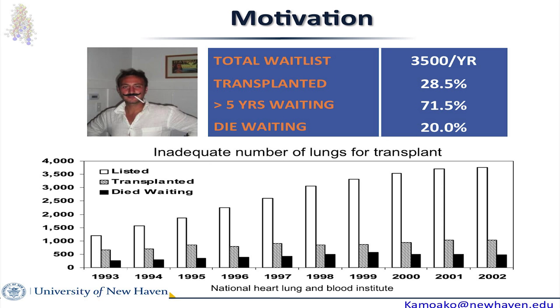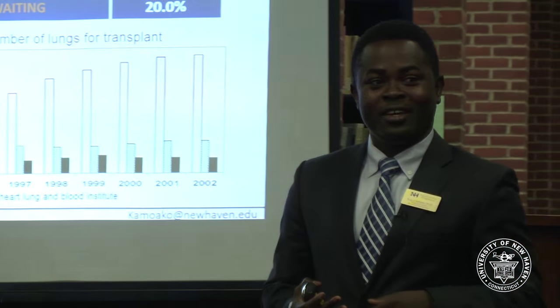The odds of Francesco actually receiving a donor lung have actually gotten worse over the years. This graph from the NIH website shows the number of patients that get transplanted versus the number of donor lungs available each year — and the gap keeps increasing. Francesco had better odds of getting a lung in the nineties than right now. So if there are good people in the audience, you can put your name on the organ donor list and his odds would become better.